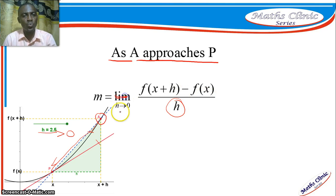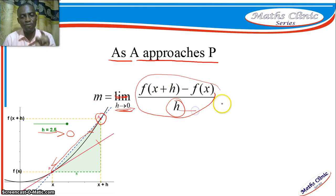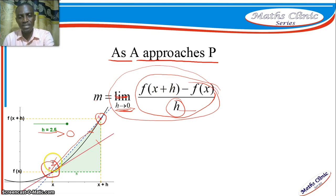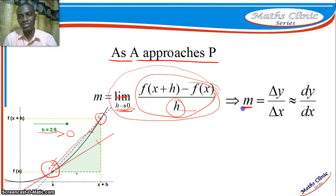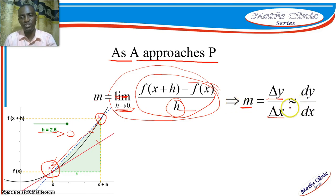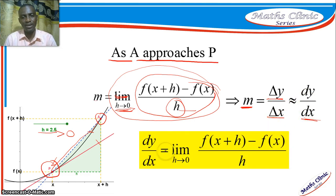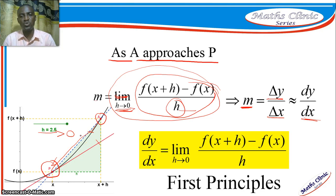We say there must be a limit to which h can go, so we say the limit as h approaches zero of [f(x+h) minus f(x)] divided by h. For that matter we can approximate the gradient of the curve at point P. So we say that change in y over change in x is approximately equal to the derivative dy/dx. Finding the differential of the function means finding the gradient, or the derivative with respect to x. So dy/dx becomes the gradient of the curve at point P — and this is what we refer to as the first principle. Thanks so much for watching.